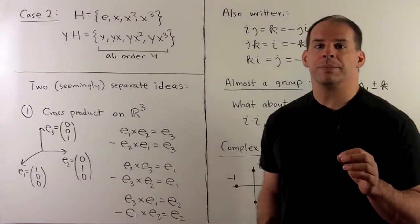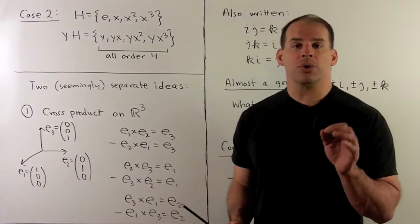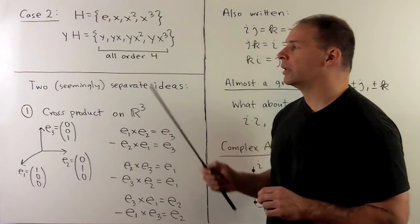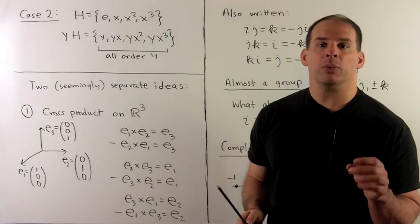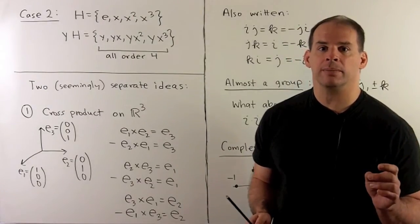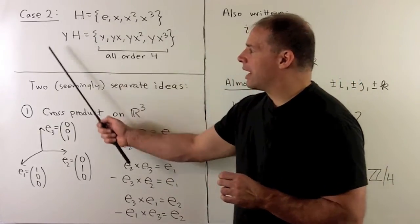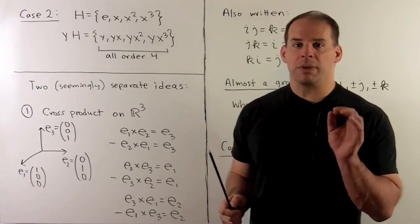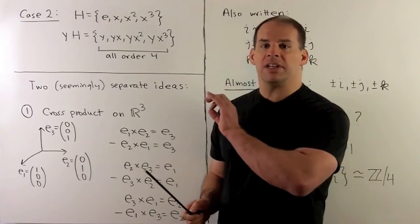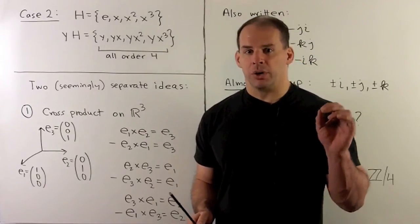For our second case, we still have the normal subgroup H, but for the coset yH, we assume all elements have order 4. If we had an element of order 2, we could use the previous argument to show we have D_8. Before we show we can narrow this down to one isomorphism class, let's give away the punchline: if we have these conditions, the group is isomorphic to the quaternion group.